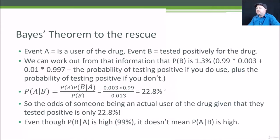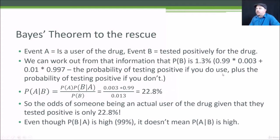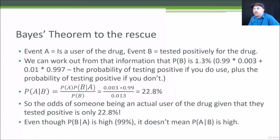We can work out the math. Let event A mean that you're a user of some drug, and event B mean that you tested positively for the drug. We need to work out the probability of testing positively overall, by looking at the probability of testing positive if you are a user, and the probability of testing positive if you're not a user. That works out to 1.3% in this example. So we have P(B), the probability of testing positively for the drug overall, without knowing anything else about you.